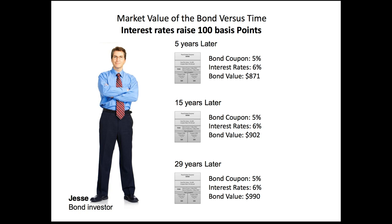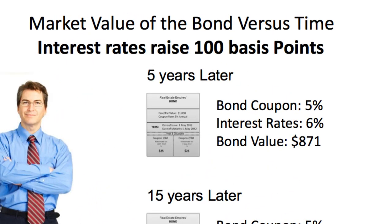Let's assume Jesse bought this bond on day one of the issue, 1 May 2012, and now we're going to warp ourselves five years later. We're going to look at how interest rates moved from when Jesse initially purchased the bond. When Jesse purchased the bond, interest rates were around 5%. But five years later, interest rates are now up at 6%, which is better for buying new bonds. On Jesse's existing bond, the bond value has gone down significantly to $871.